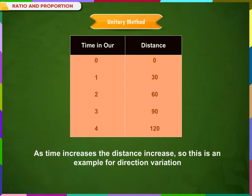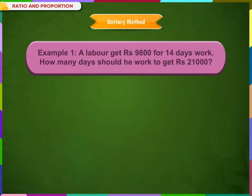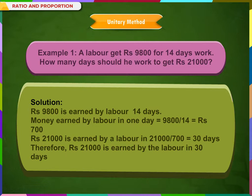Let us solve some problems based on the Unitary Method. A labour gets Rs. 9,800 for 14 days' work. How many days should he work to get Rs. 21,000? Solution: Rs. 9,800 is earned by the labour in 14 days. Therefore, money earned in one day = Rs. 9,800 ÷ 14 = Rs. 700. So Rs. 21,000 is earned in 21,000 ÷ 700 = 30 days. Therefore, Rs. 21,000 is earned by the labour in 30 days.